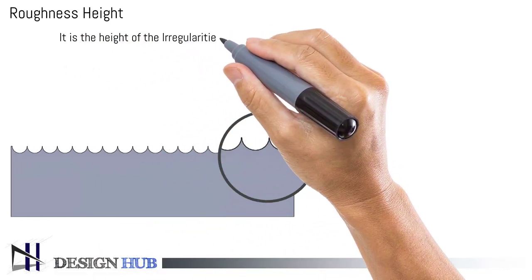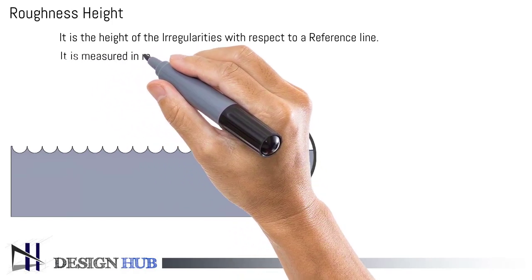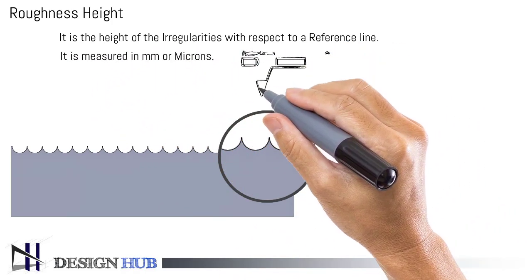Roughness height is the height of the irregularities with respect to a reference line. Roughness height is measured in millimeters or microns.